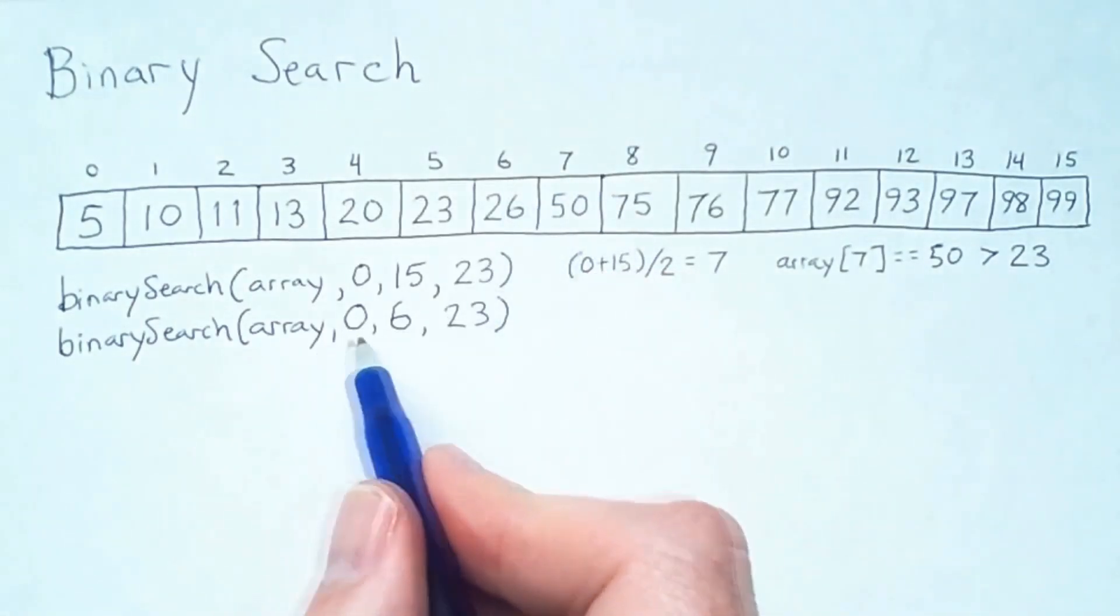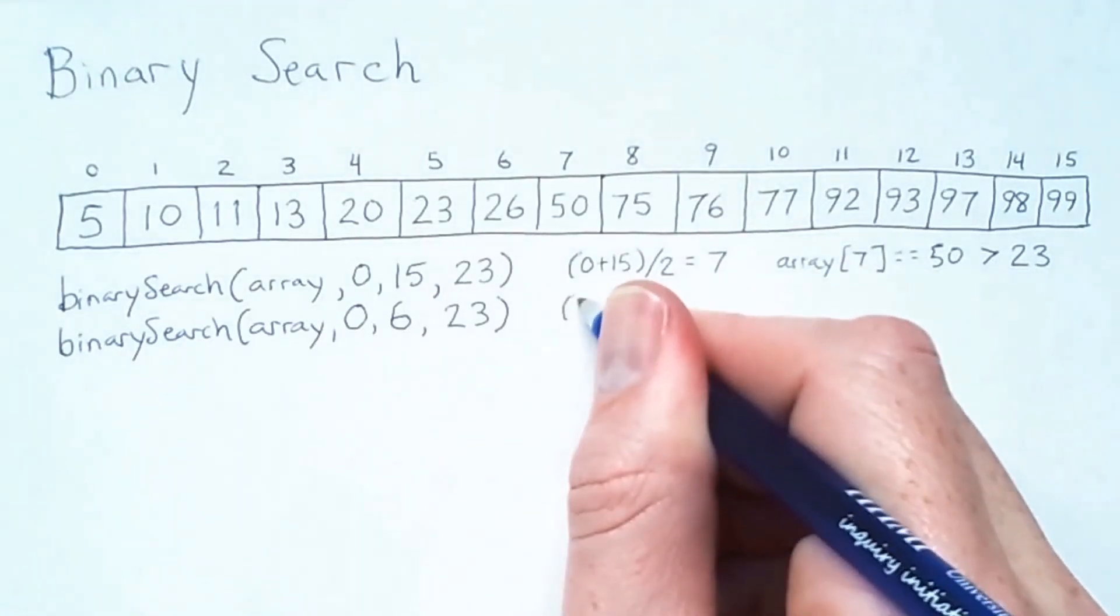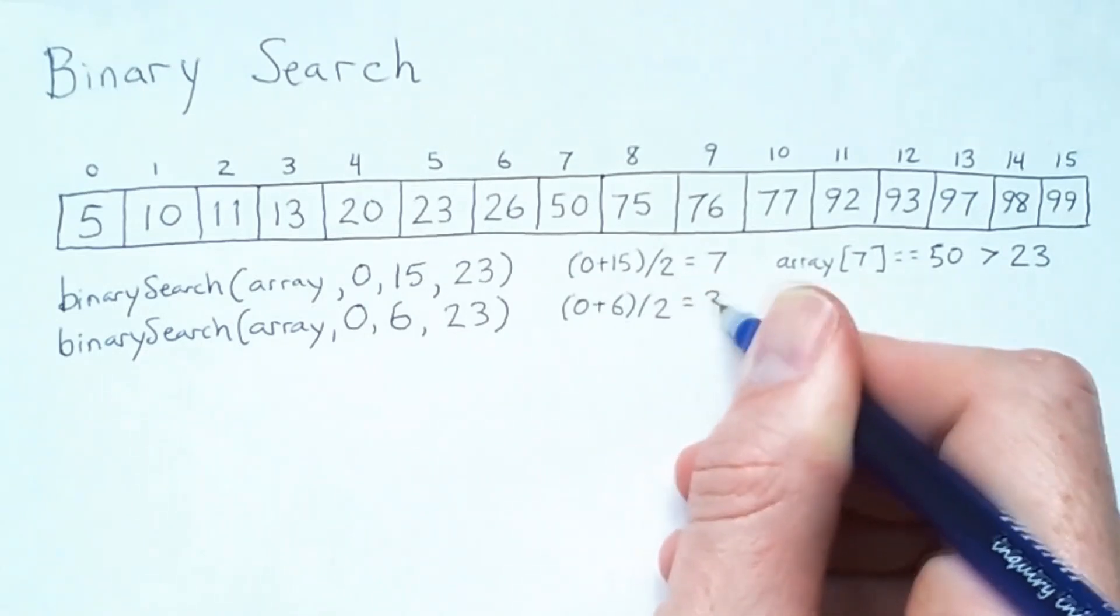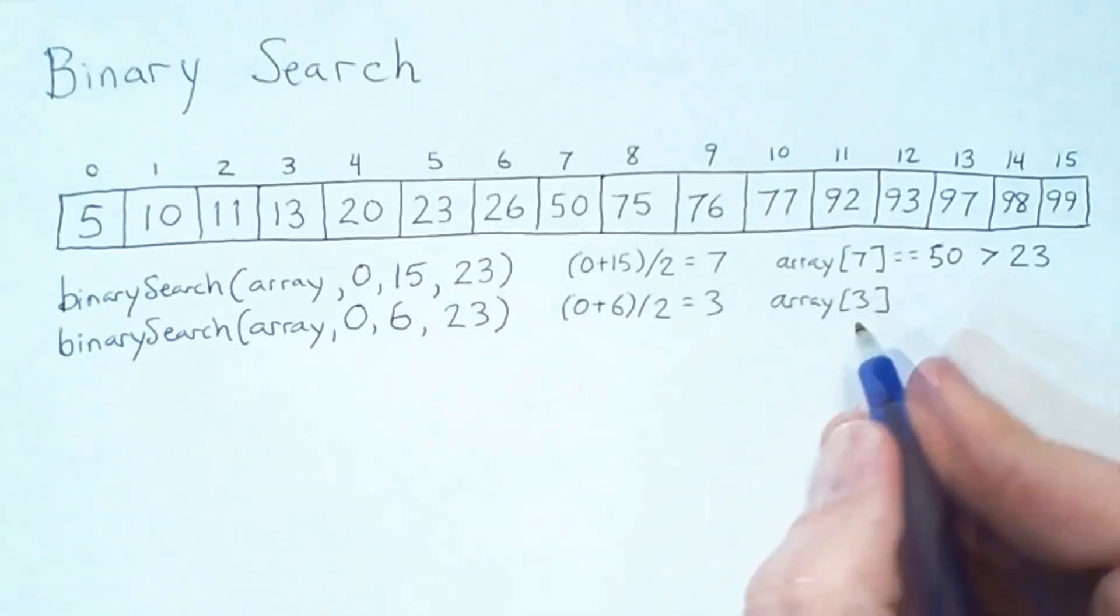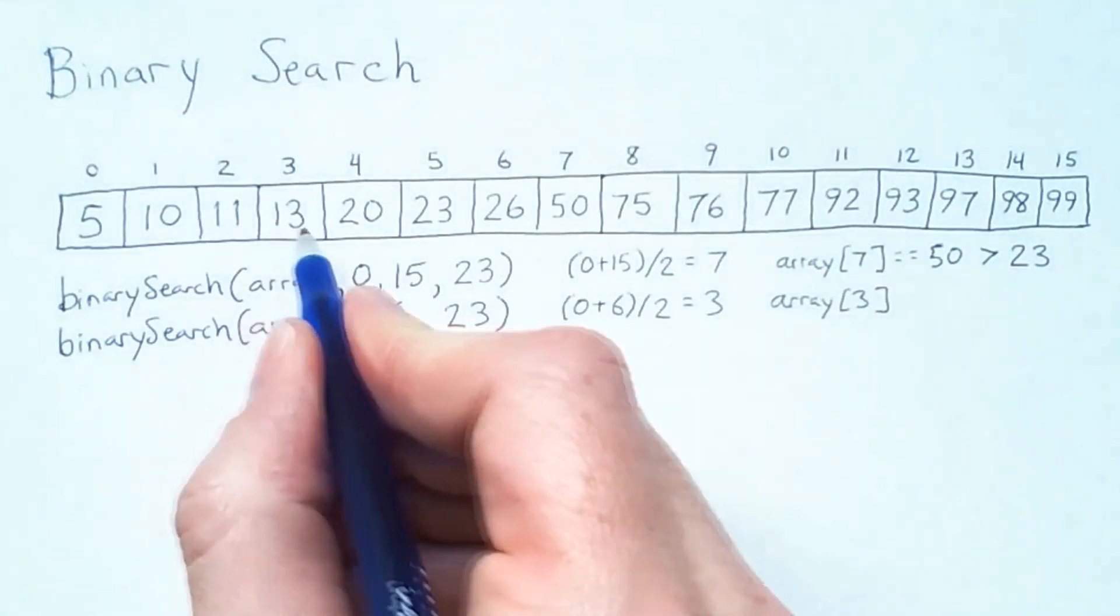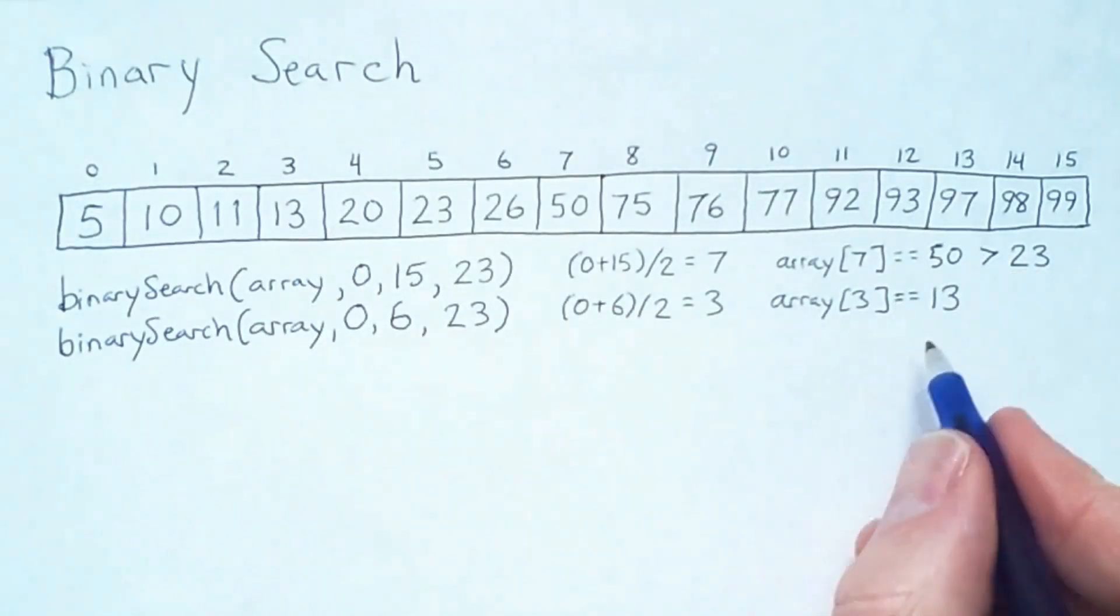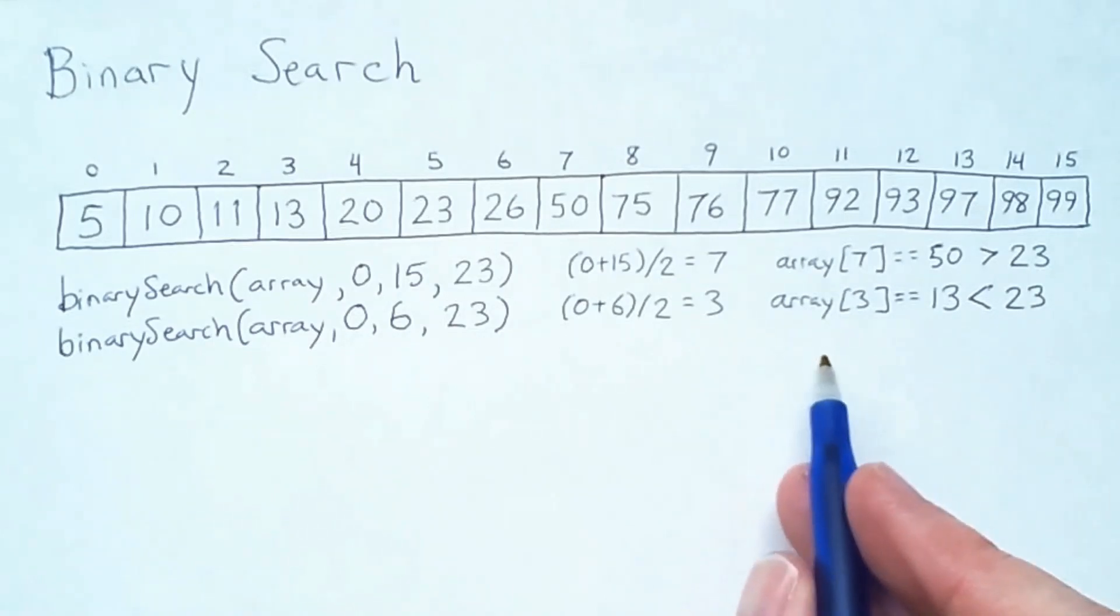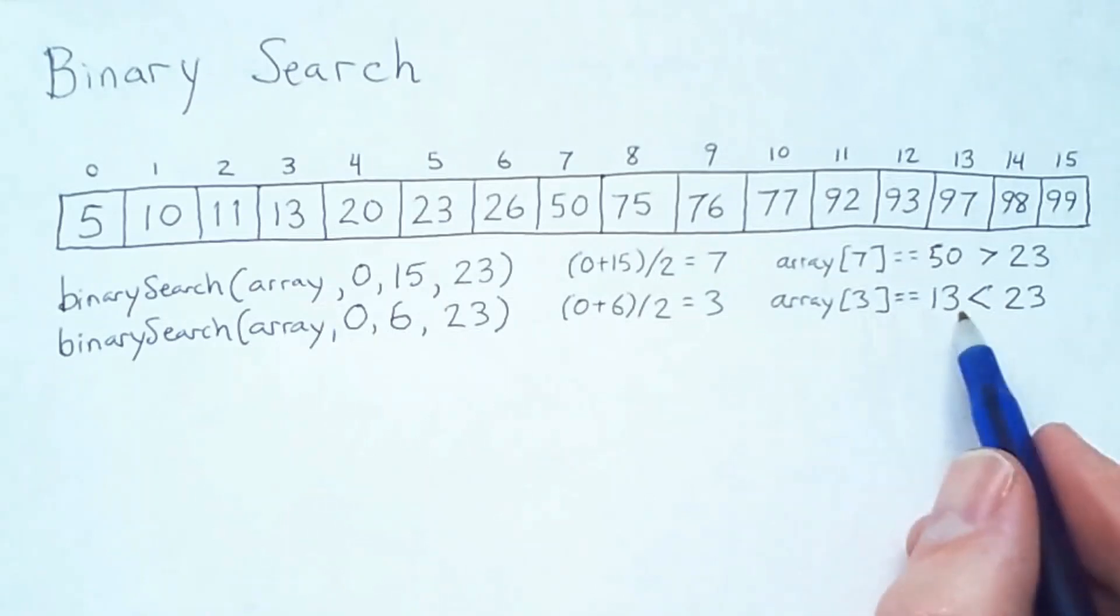We're searching from 0 to 6 for a search key of 23. We once again compute a midpoint, which is 3, and then check the array at that index. Array index 3 is 13. And this time, 13 is less than 23.